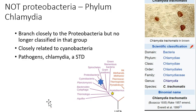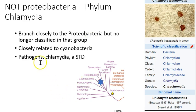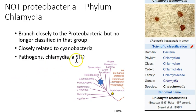Your textbook incorrectly states that the Chlamydia group is within the proteobacteria — that's outdated information. In fact, Chlamydia belongs to its own phylum and branches somewhere between the proteobacteria and the cyanobacteria; they are closely related to both but are their own distinct branch. Many chlamydia are pathogens — for example, Chlamydia trachomatis causes the sexually transmitted disease chlamydia, which can be treated with antibiotics but has very serious health consequences if left untreated.